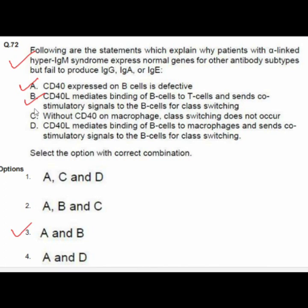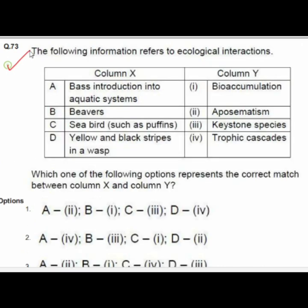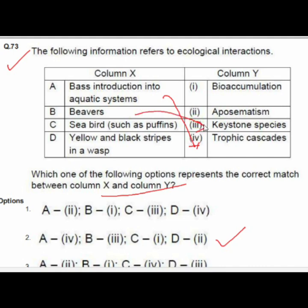Question 73 is also a match-the-following on ecological interactions. Option 2 is correct: A matches with 4, B matches with 3, C matches with 1, and D matches with 2.